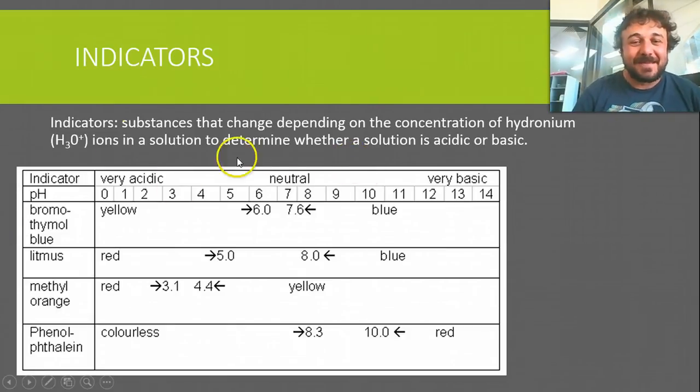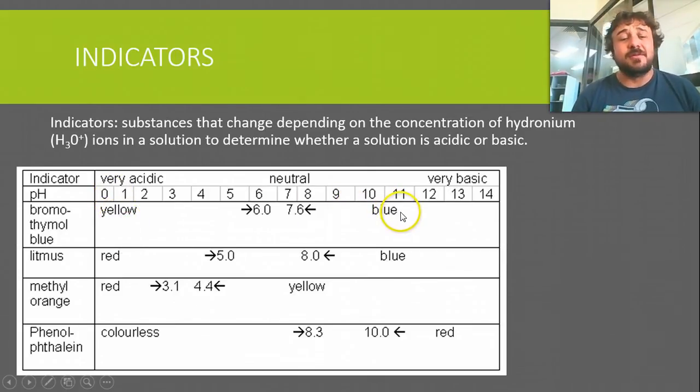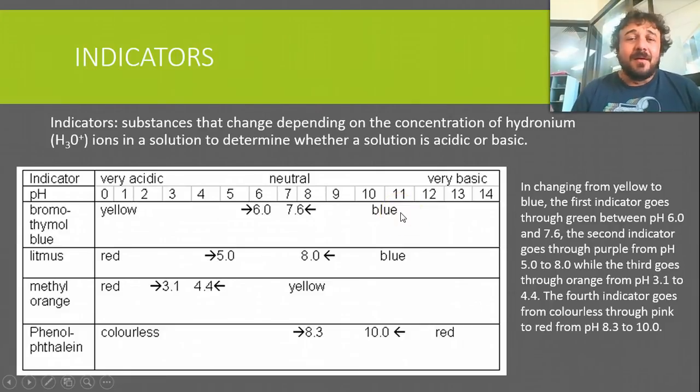Alright, so this table right here, what we have is our four main indicators that we will use. Here it says yellow for very acidic, and very basic is blue, and this is bromothymol blue. So what this means is, as it's changing across this range in the middle, it'll go from yellow to blue, and it will do this by going through green.